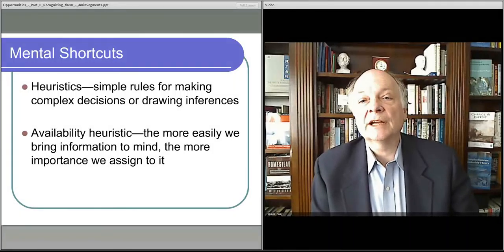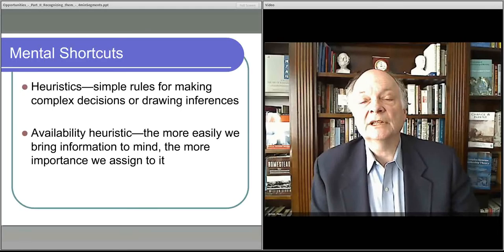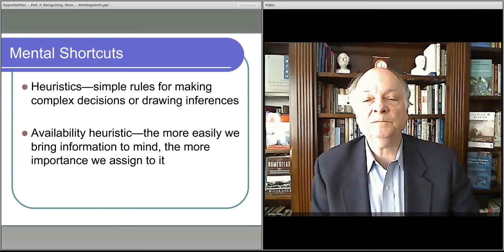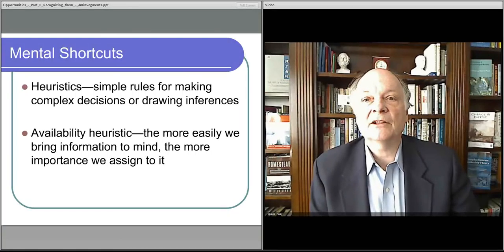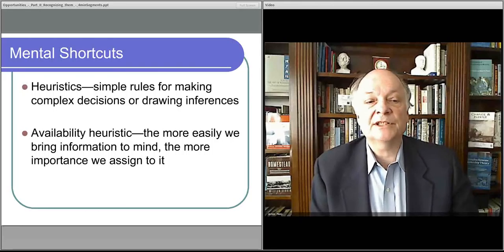Herbert Simon, Nobel laureate in the social sciences, is one of the people that really did a lot of work on this. He called it bounded rationality, which means that we don't completely think in detail about a lot of these things. Many times, we make these simplifying assumptions or these heuristics.